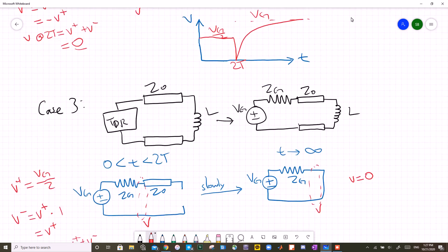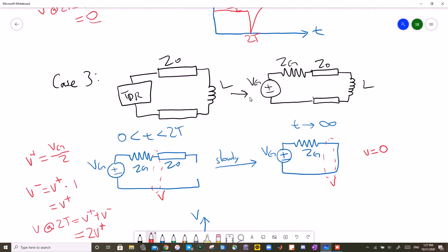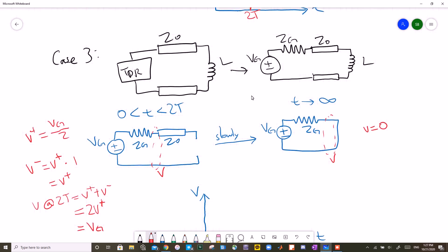Now let's take a look at the third case where the load is now an inductor. We do it with the same approach. An inductor is opened initially, and then it turns into a short circuit. So from 0 to 2T, the inductor is open and the circuit looks like this. Therefore VT is still VG over 2, however the reflection coefficient for an open circuit is 1. The entire wave reflects back. So V minus is V plus, and adding those two we get VG. And when the inductor turns into a short circuit, there is no voltage drop through a short circuit, so V is 0 at the end.